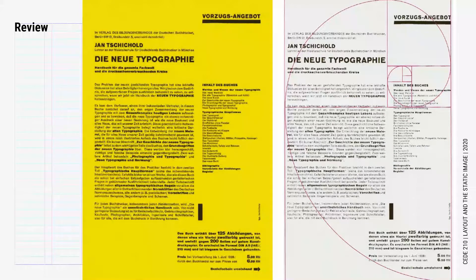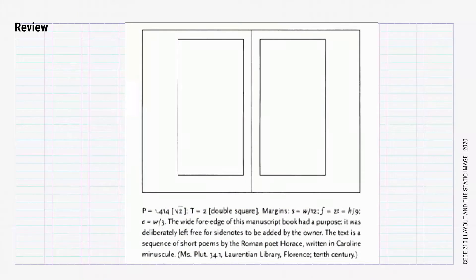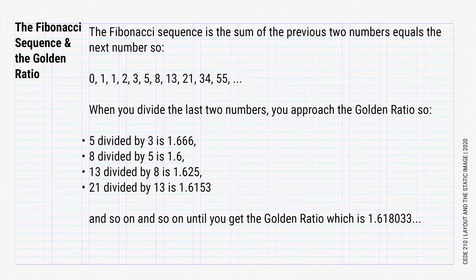When creating a layout, you want to keep proportions in mind. You want to make sure the margins, the main text area, the secondary text areas, and even the gutters are all in proportion to each other. This is especially important in layout as it forms a structure — the skeleton of your layout. Here's a good example of how we can approach a page layout using the Fibonacci sequence, which leads to the golden ratio and section.